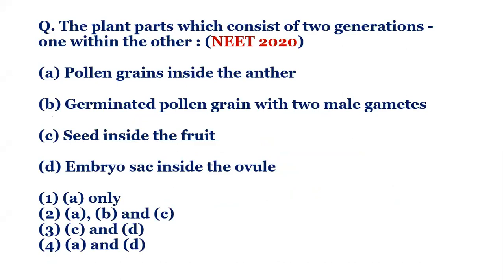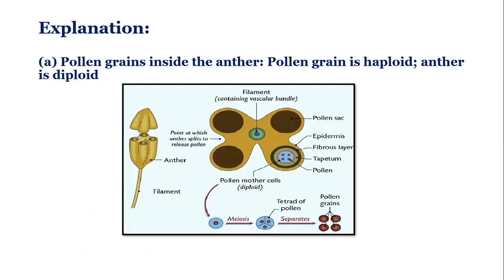The question is: the plant parts which consist of two generations one within the other. Options: (a) pollen grain inside the anther, (b) germinated pollen grain with two male gametes, (c) seed inside the fruit, and (d) embryo sac inside the ovule. So let's move on to the explanation part.